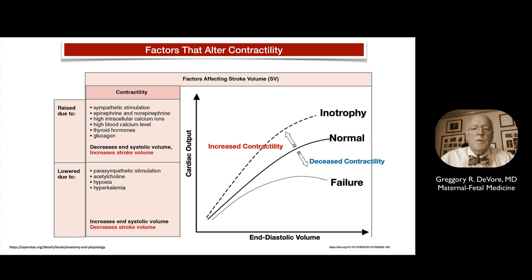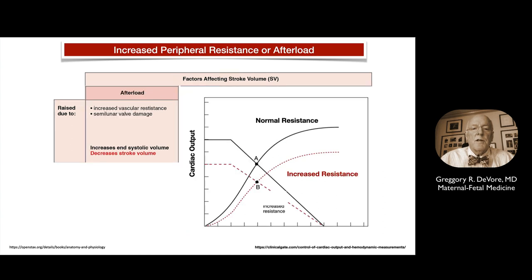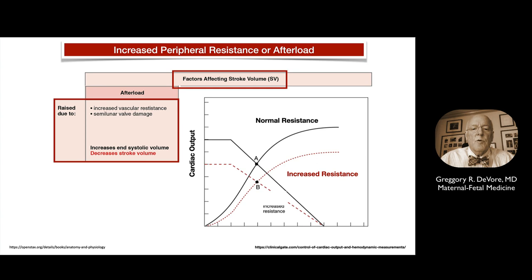This illustrates factors that alter ventricle contractility. If contractility is increased, this results in a higher stroke volume and increased cardiac output. Conversely, factors that decrease contractility, such as hypoxia, result in decreased stroke volume and cardiac function. This also illustrates the effect of peripheral resistance on cardiac output. If peripheral resistance is increased, this results in decreased stroke volume and cardiac output. The Frank-Starling curve illustrates that as afterload or peripheral resistance increases, cardiac output decreases.